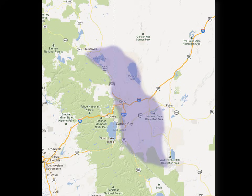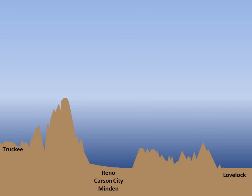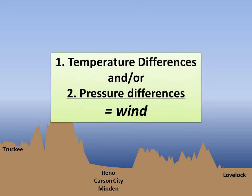Let's start with the basics to explain how the Washoe Zephyr forms during these summer days. Wind can be created by two different mechanisms: differences in temperature or differences in pressure. The greater the surface pressure difference or thermal difference between two points, the stronger the wind. Differences in heating of near-surface air create density and pressure differences, resulting in the formation of areas of high and low pressure.